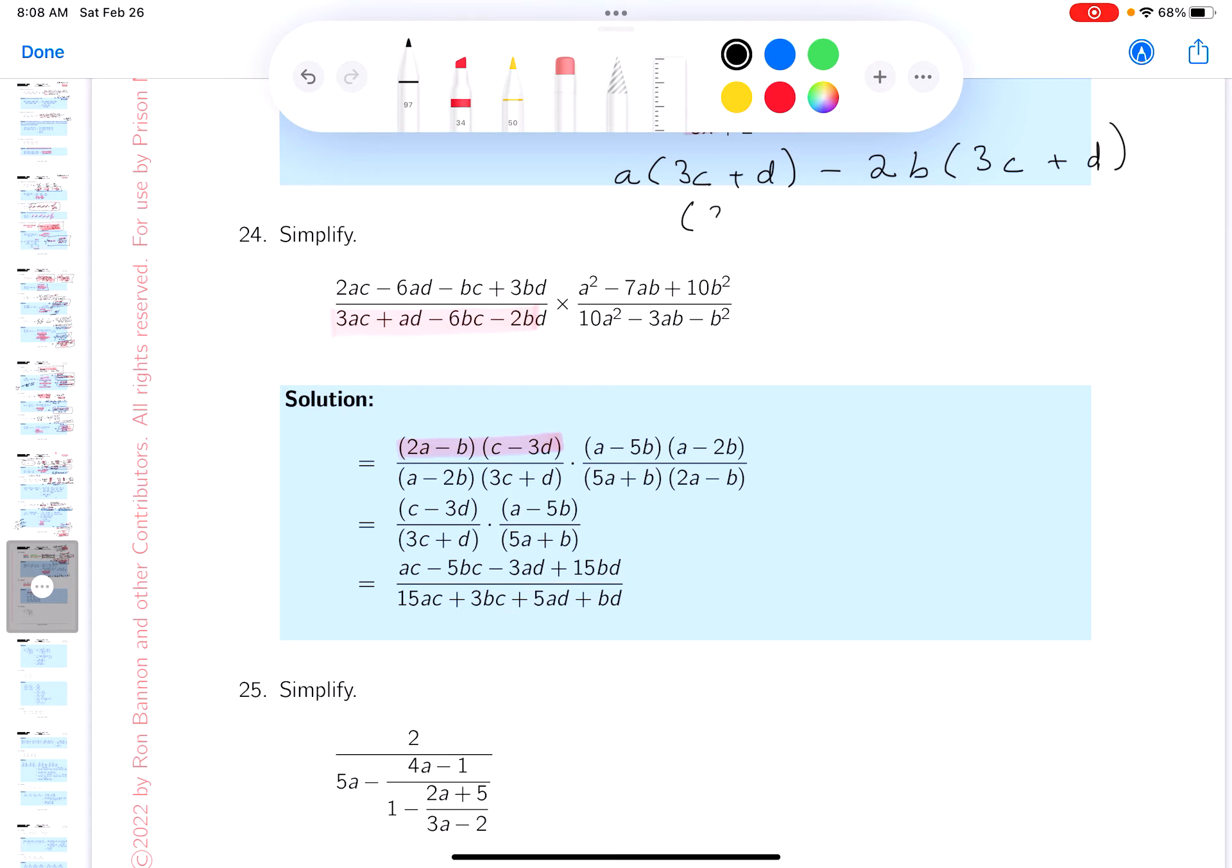Well, I notice it again - the factor common between those two terms. There were four terms, now there's two terms. What's that common factor? It's this. So I'm expecting to see that. Do I see it? Do I see the a minus 2b? Do I see the 3c plus d? Yes, that worked out beautifully.